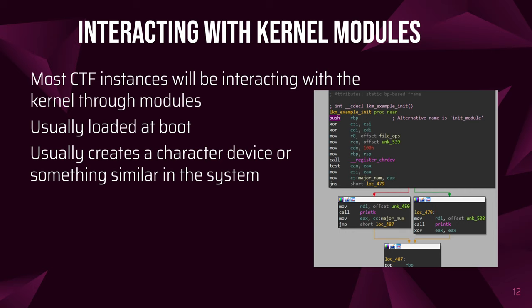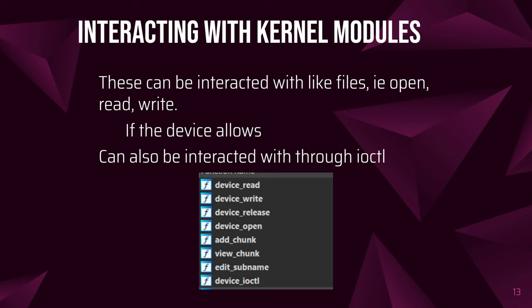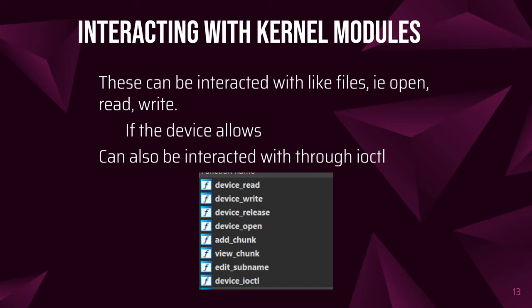Now we get to interacting with kernel modules. Kernel modules are loaded into kernel space, usually at boot in CTF instances so you don't have to load them. This will usually create a character device inside /dev or /proc. Interacting with them is mostly like interacting with a file — you can open, read, and write. There are device_read, device_write, and device_open functions. It's also usually interacted with via the syscall ioctl, which stands for input/output control, and there's a device_ioctl function to handle those requests.